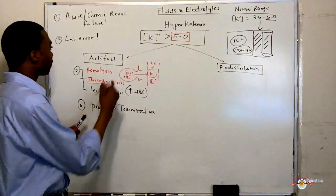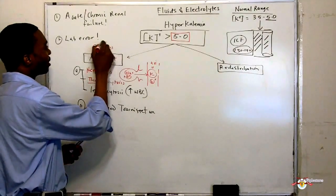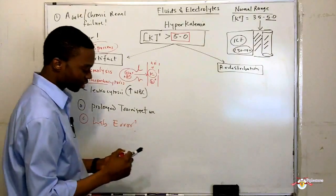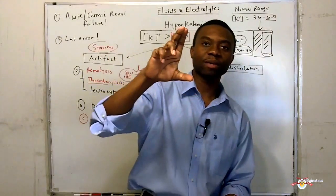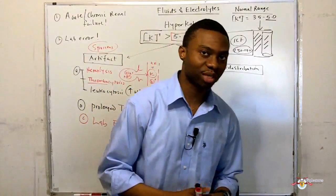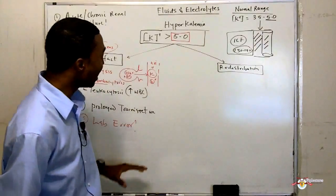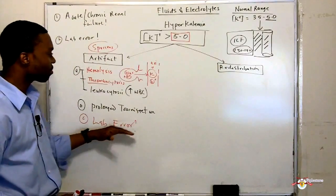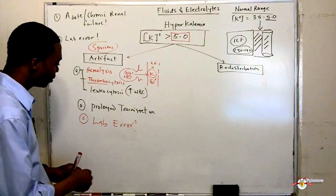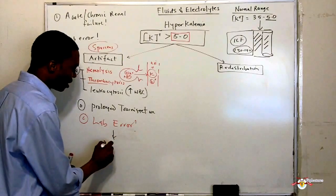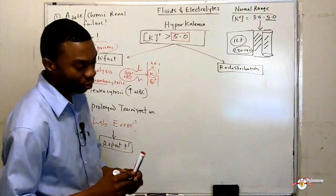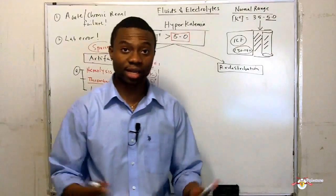This is called the spurious form of hyperkalemia. Another cause is lab error — somebody draws blood and leaves it on the rack for so long that the cells start to break down and release potassium. If you get back a result due to hemolysis or prolonged tourniquet use, all you have to do is repeat the potassium level. Just redraw the blood, recheck it, and the potassium will be fine.